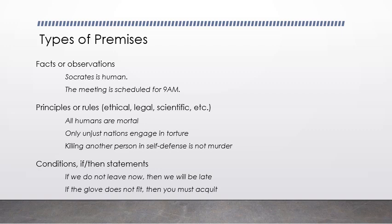We talked about various different types of premises. Premises can be facts or observations, like 'Socrates is human' or 'The meeting is scheduled for 9am.' They can be principles or rules, like 'All humans are mortal' — a scientific fact — or 'Only unjust nations engage in torture' — an ethical principle — or 'Killing another person in self-defense is not murder' — a legal and ethical principle. Premises can also be conditions, like if-then statements: 'If we do not leave now, then we will be late'; 'If the glove does not fit, then you must acquit.'